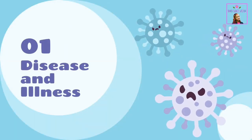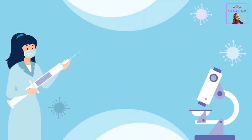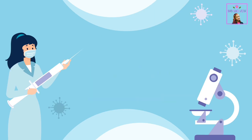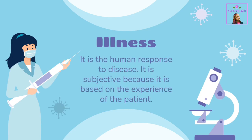Disease and Illness. A disease is a pathological condition that disrupts the normal functioning of the body. It is objective, characterized by an abnormality in the structure or function of body organs. Illness is the human response to disease. It is subjective because it is based on the experience of the patient.